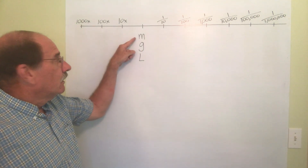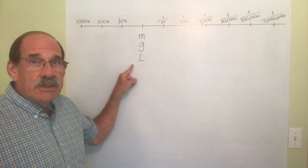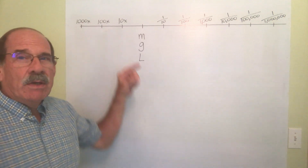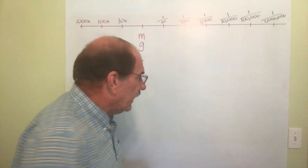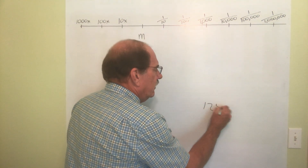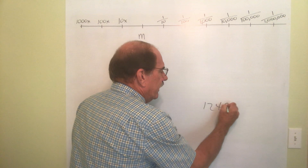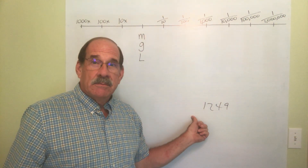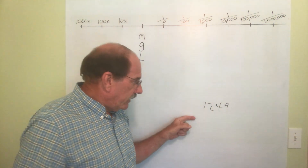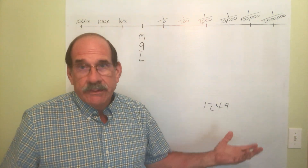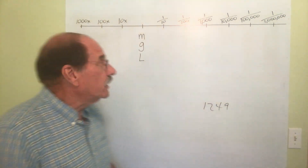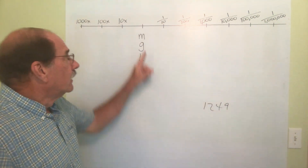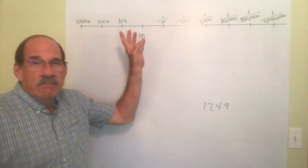Our basic measurements are meter, gram, and liter. When you write a number like 1,249, the farther you go one way the numbers get bigger, and the farther the other way the numbers get smaller. So bigger this way and smaller that way — pick whether meter, gram, or liter.